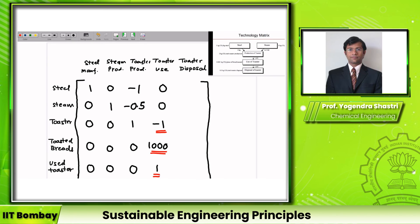In the disposal phase, the only relevant flow is the used toaster going in, so it has a coefficient of −1. All other entries are zero. This is how you construct the technology matrix.